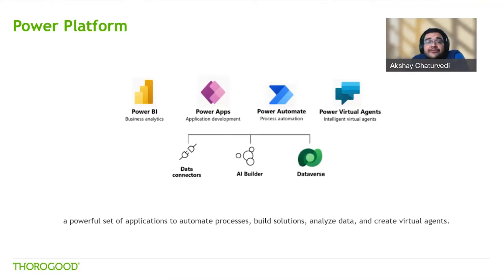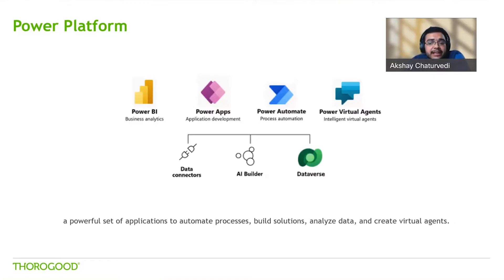Power Automate, formerly known as Flow, enables process automation to improve business productivity by automating repetitive, time-consuming tasks. It provides a better way to get things done across your organization through digital and robotic process automation, commonly known as RPA. Power Automate is investing in several areas like cloud flows — automation that runs in the cloud using more than 475 connectors, triggered automatically, instantly, or on a schedule — as well as AI Builder, process advisor, document automation, and many more.